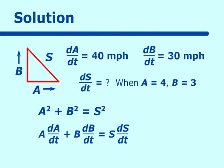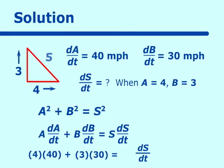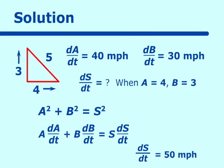In this one I'm going to fill in the numbers for A, B, s, dA/dt, and dB/dt and then solve for ds/dt. A is 4, dA/dt is 40, B is 3, dB/dt is 30. Since A is 4 and B is 3, we recognize a 3-4-5 triangle, so s equals 5. Solving for ds/dt we get 50 miles per hour.